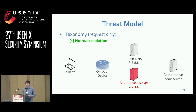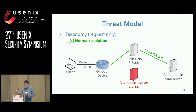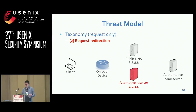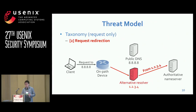According to our observations, from the view of the authoritative name server, we classify the DNS resolution path into four categories. The first is standard normal resolution without interception — a client sends a DNS request to a public DNS, and it only reaches the specified resolver. From the view of the name server, it sends only one request from the correct public DNS. The second case is called request redirection — a client sends a request to a public DNS, but it is redirected to an alternative resolver, not reaching the public DNS. In this case, the specified public DNS is completely removed from the DNS resolution process, and from the view of the name server, it receives only one request from the alternative resolver.